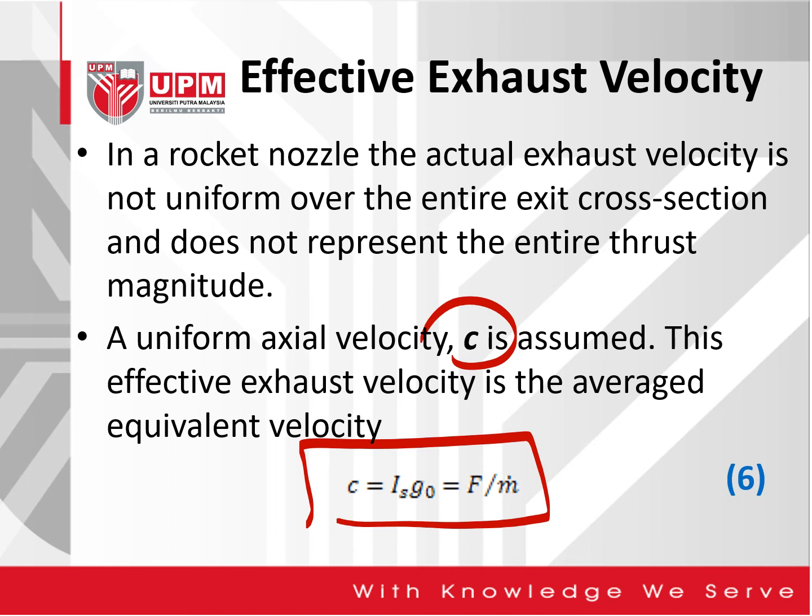The effective exhaust velocity is expressed in equation 6, where C equals the specific impulse times the gravitational acceleration, which is equal to the thrust divided by the mass flow rate.